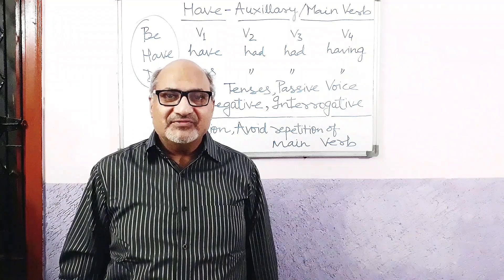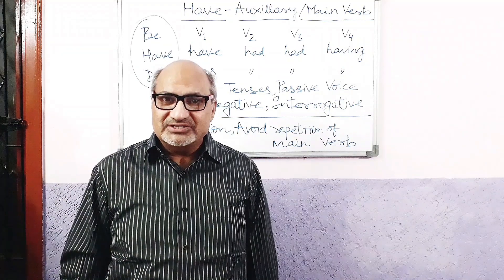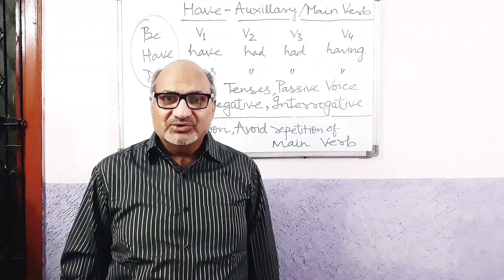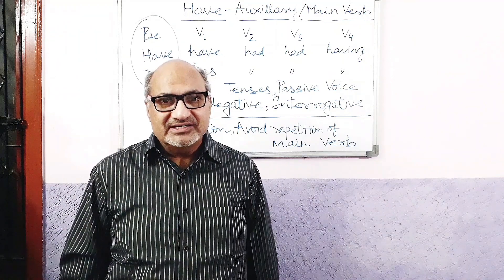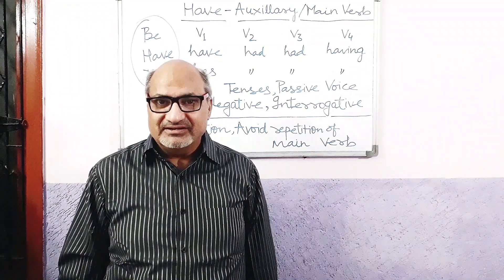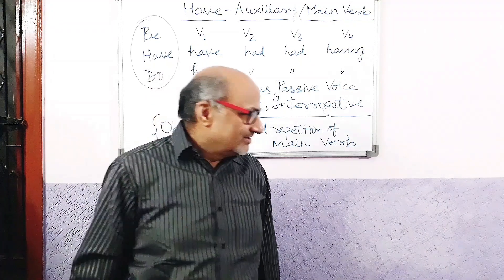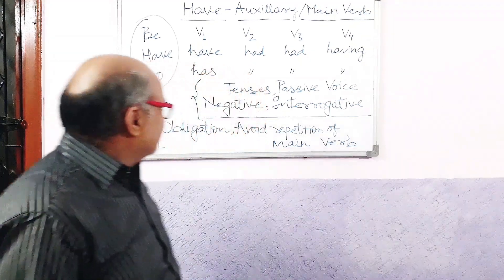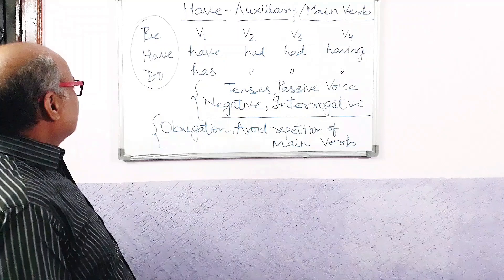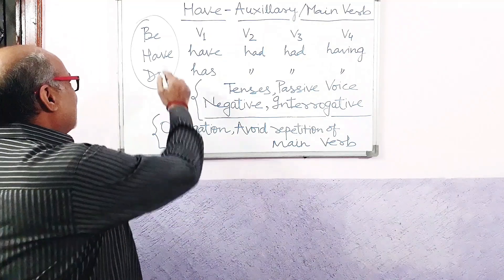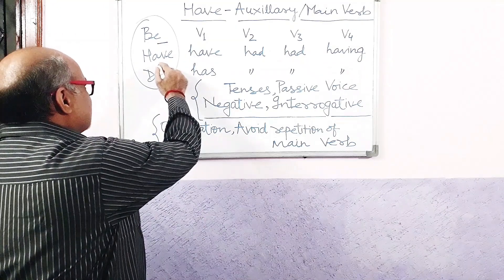If you have any doubts or queries afterwards, you can clear them through the comment section or the links given in the description of the channel. Let's recall that there are three auxiliary verbs in English: be, have, and do. Since we have already covered the first one — 'be' — today's concern is 'have.'